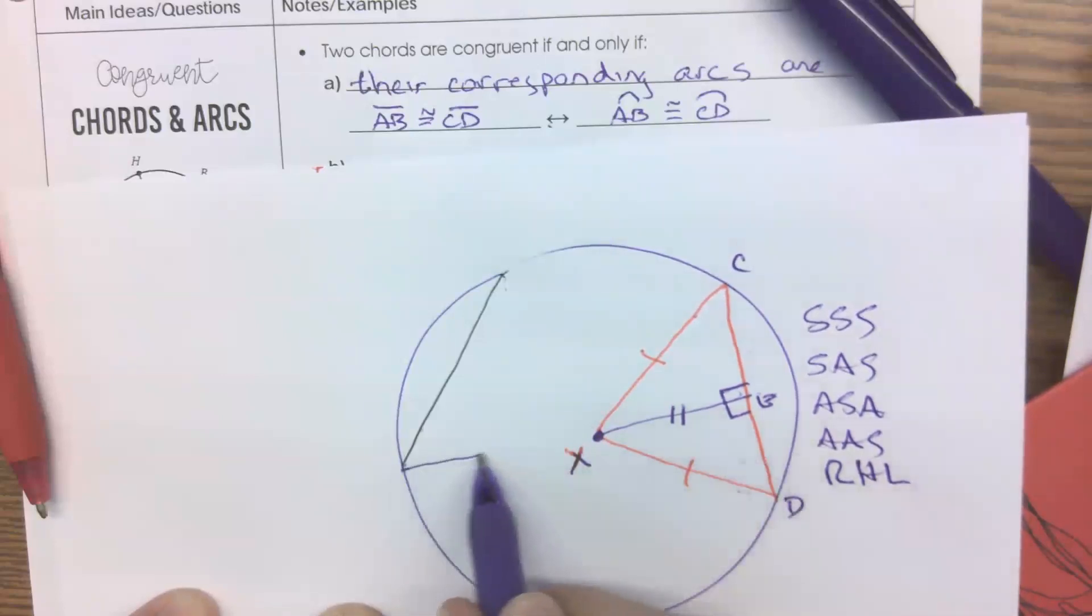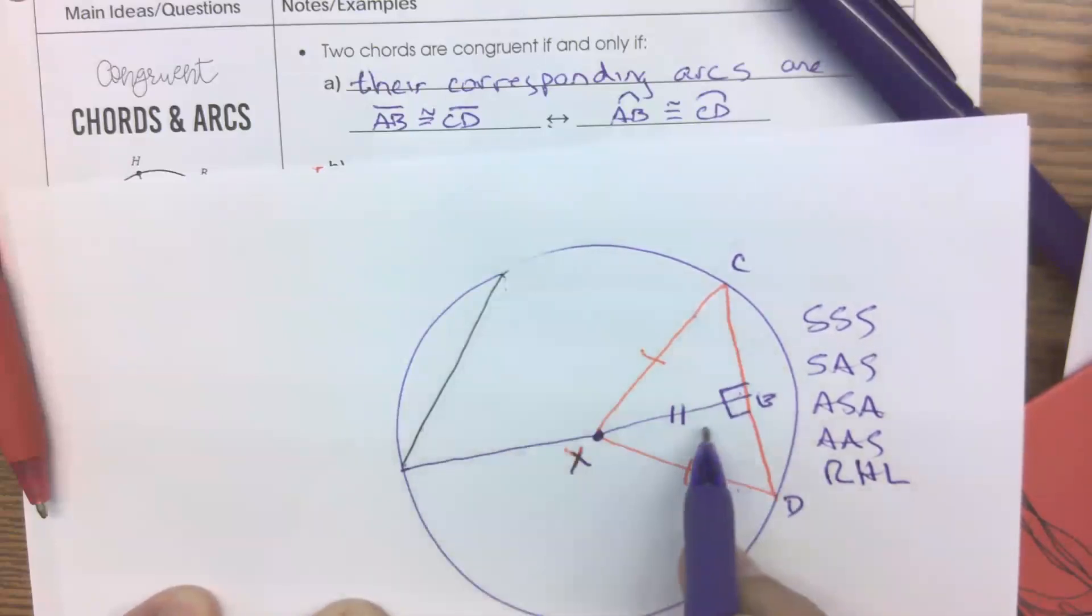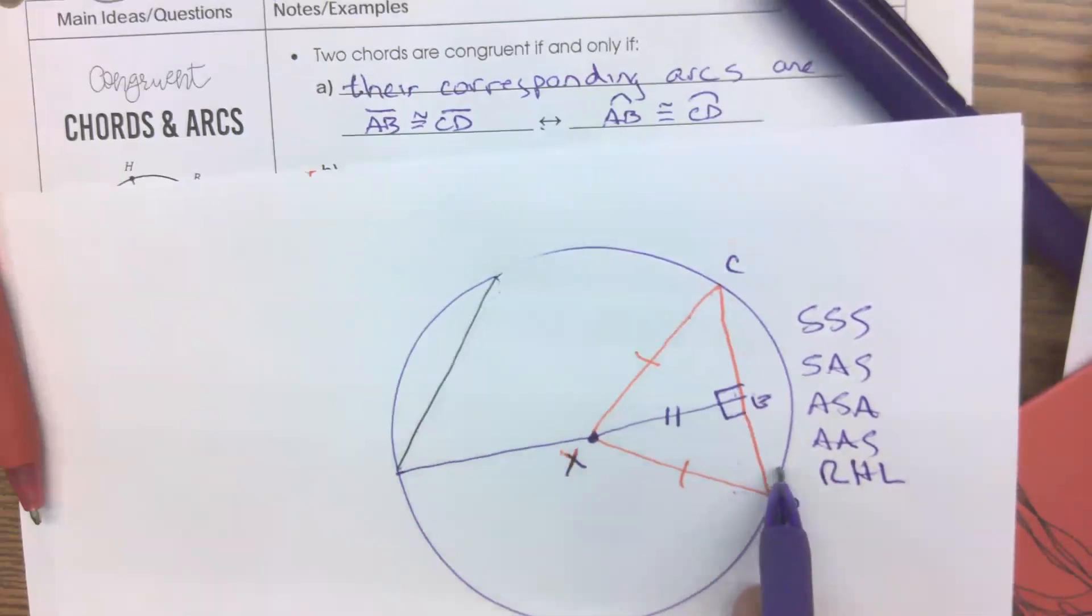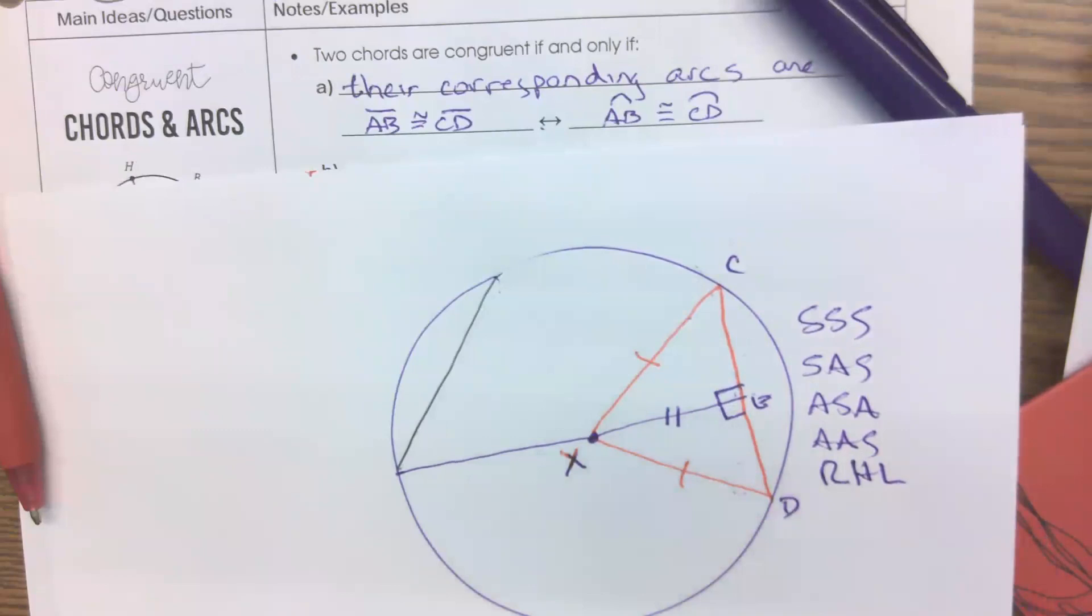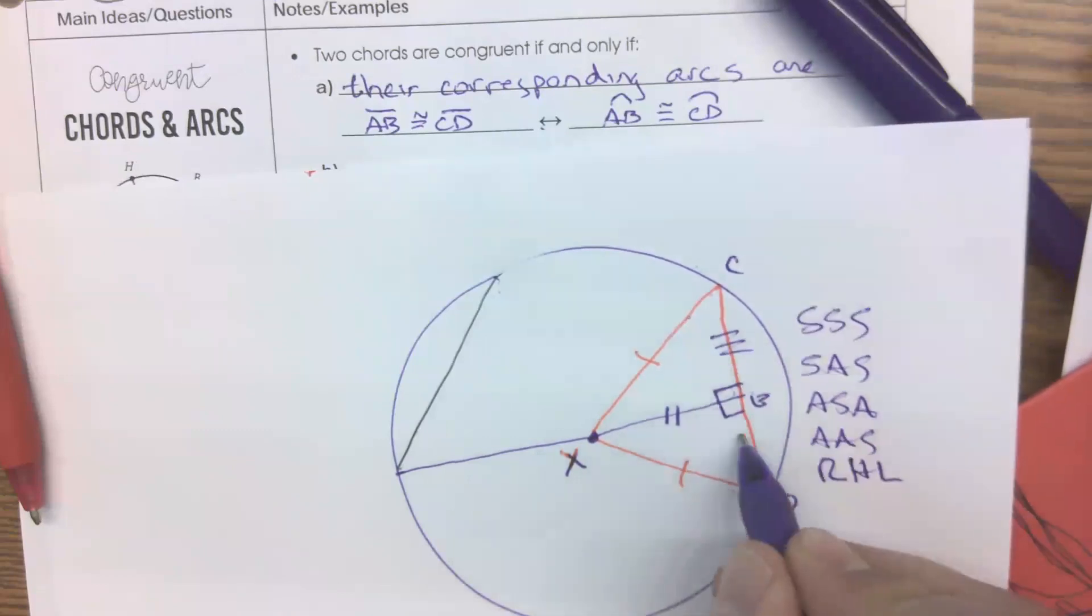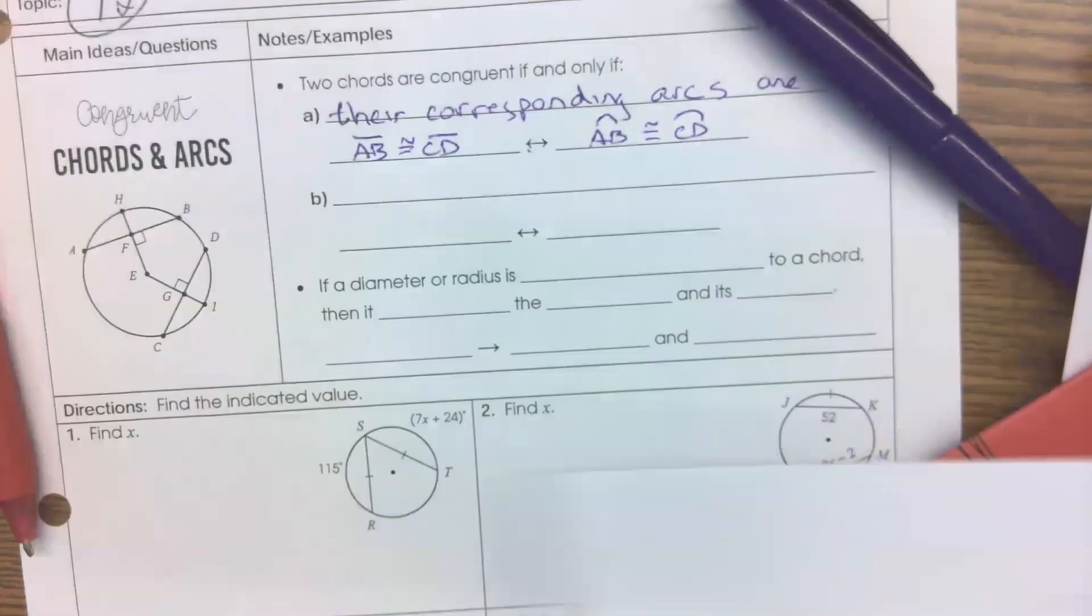And what if I then talk about, well, so if these two triangles are congruent, what do we know about CE and DE? CE and DE, what do we know about them? They're also congruent.